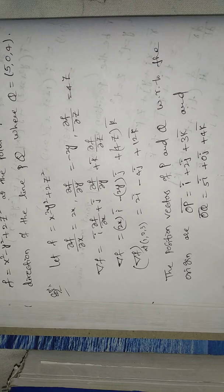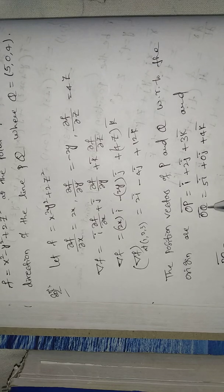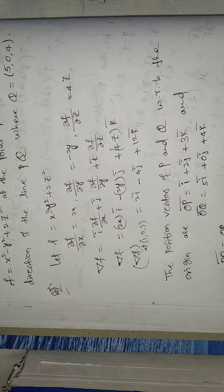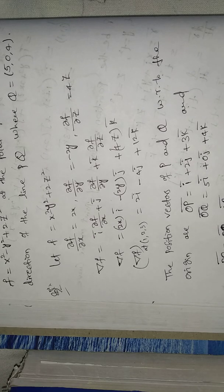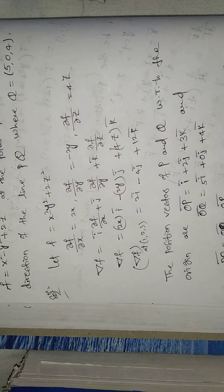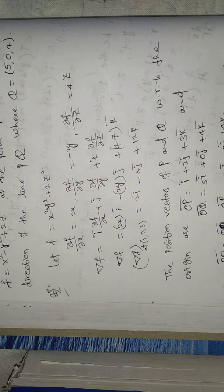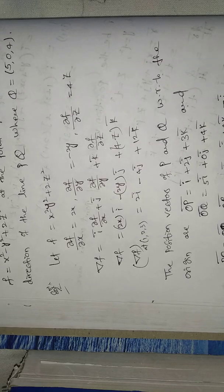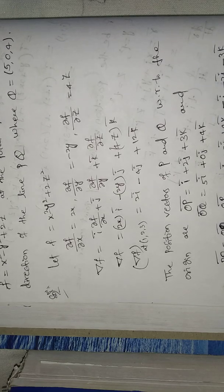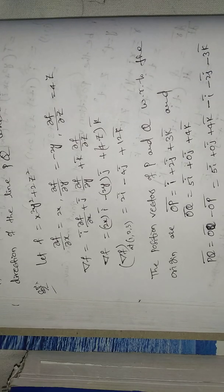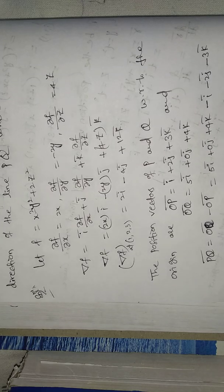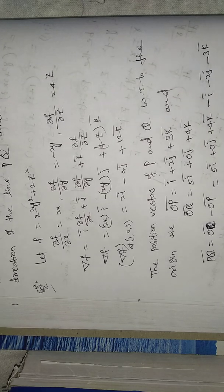PQ-bar equals OQ-bar minus OP-bar equals (5i-bar plus 0j-bar plus 4k-bar) minus (i-bar plus 2j-bar plus 3k-bar) equals 4i-bar minus 2j-bar plus k-bar.